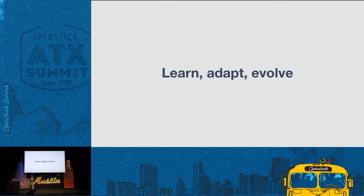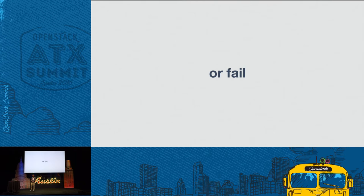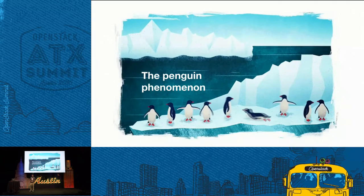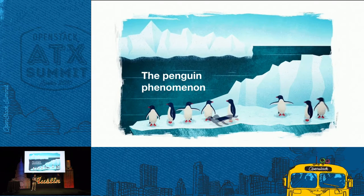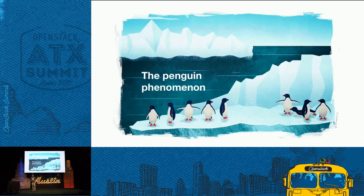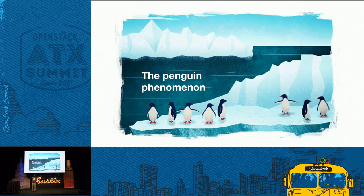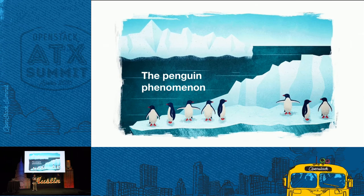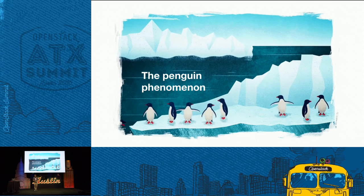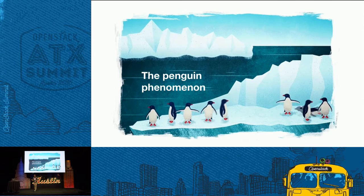One of the things I learned at college is that you need to be able to learn, adapt and evolve because if you don't, you're going to fail. If you're not continuously finding new and improved ways of doing things, you kind of end up like the penguins. The penguins are kind of marching towards their own extinction because they're not adapting fast enough to climate change.